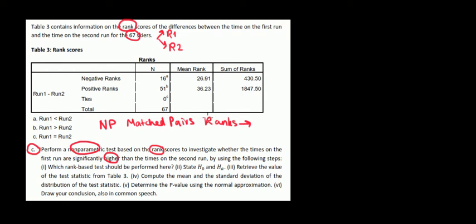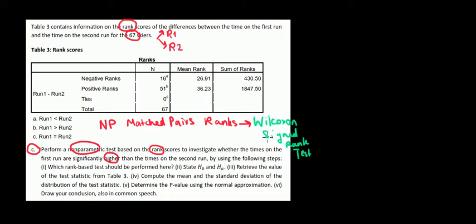Now the question is: what kind of Wilcoxon test — rank sum or signed rank test? For matched pairs with ranks, we use the Wilcoxon signed rank test. I highlighted the difference between them two videos ago where I covered the overall non-parametric tests, so have a look there as well.